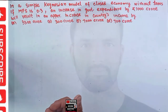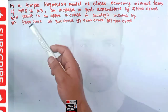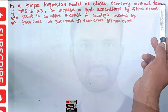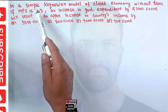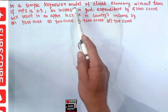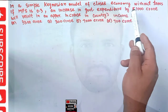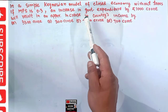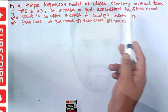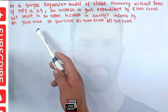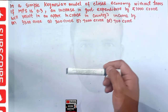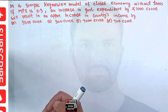In this video we will try to solve a numerical on the Keynesian model of a closed economy. In a simple Keynesian model of closed economy without taxes, if the marginal propensity to save is given as 0.3, an increase in government expenditure by rupees 1000 crore will result in an approximate increase in the country's income by — options are 3300 crore, 300 crore, 7000 crore, and 700 crore.